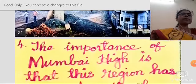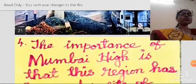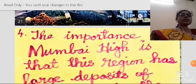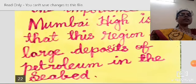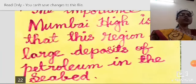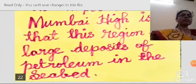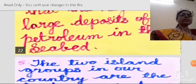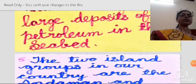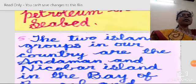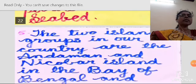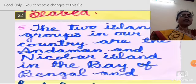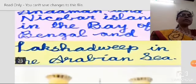The importance of Mumbai High is that this region has large deposits of petroleum in the seabed. The two island groups in our country are the Andaman and Nicobar Islands in the Bay of Bengal and Lakshadweep in the Arabian Sea.